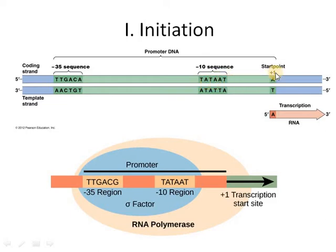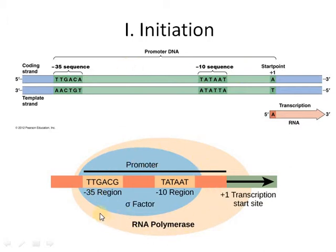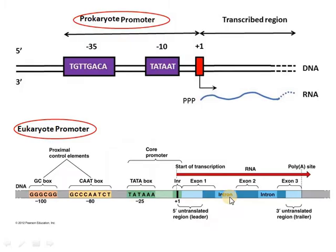Aur start point se 35 base pairs pehle ek sequence hota hai, which is called TTGACA. Theek hai ji? So, inko pehchan ke RNA polymerase is point ke upar attach hota hai, aur phir transcription shuru karta hai.